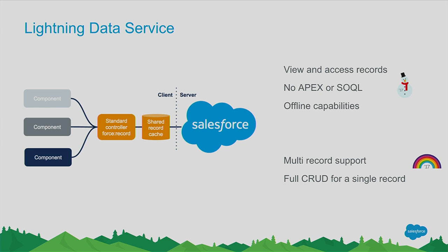Lightning Data Service also brings shared record caching — if your component uses Lightning Data Service, it will have shared record caching on the client side, making it much faster than components not using it. Lightning components today do not enforce CRUD and FLS, but if your Lightning components use Lightning Data Service, you automatically get CRUD and FLS. You also get offline support for free, whether you're using this Lightning component in a mobile S1 device or on your desktop.